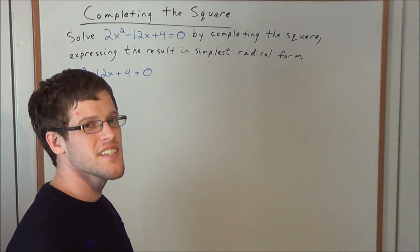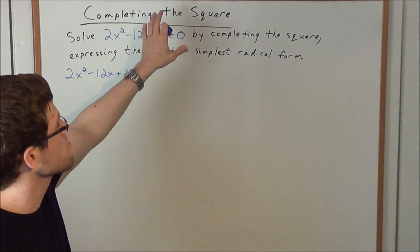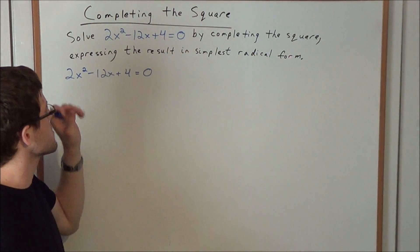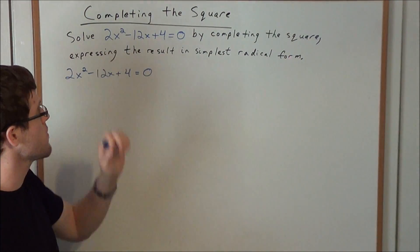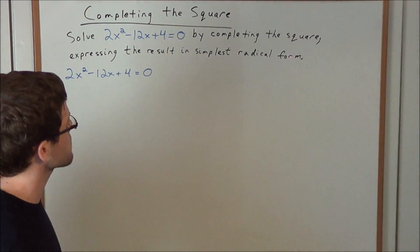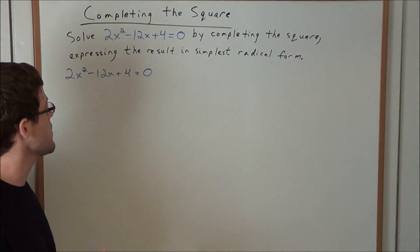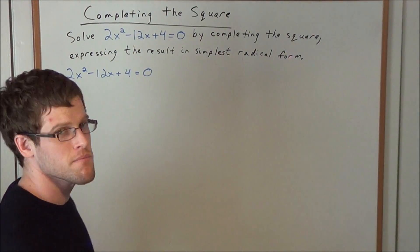Hello YouTube students, my name is Vincent, and today I want to take a look at completing the square. More explicitly, I want to look at the Regents question, the New York Regents question: solve 2x² - 12x + 4 = 0 by completing the square, expressing the result in simplest radical form.